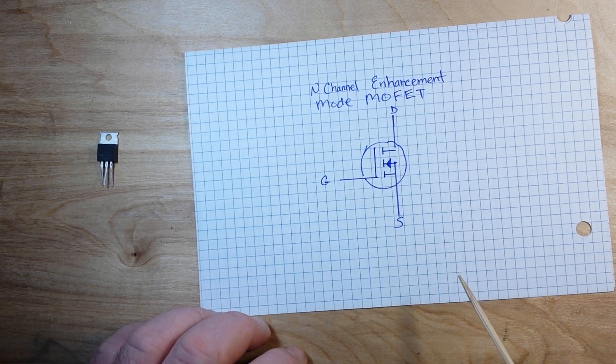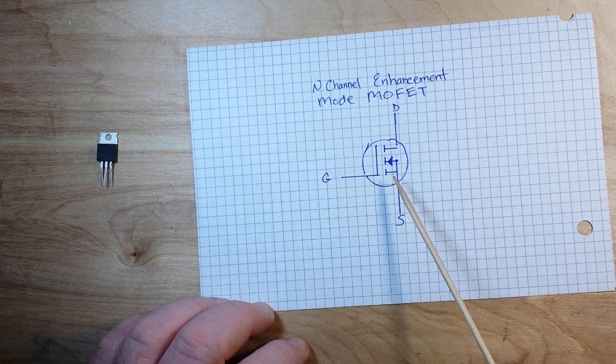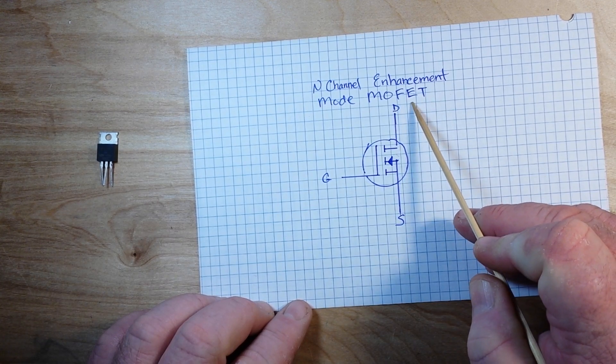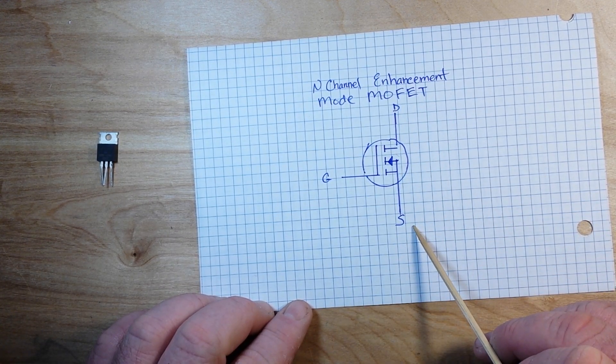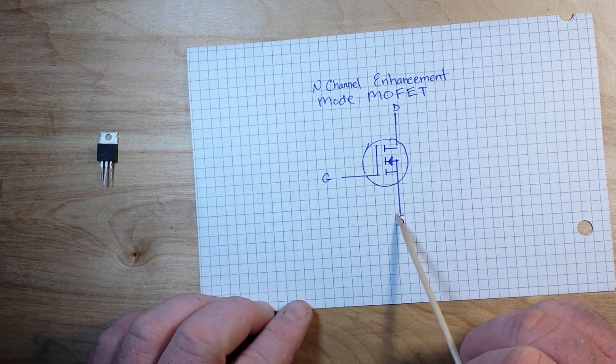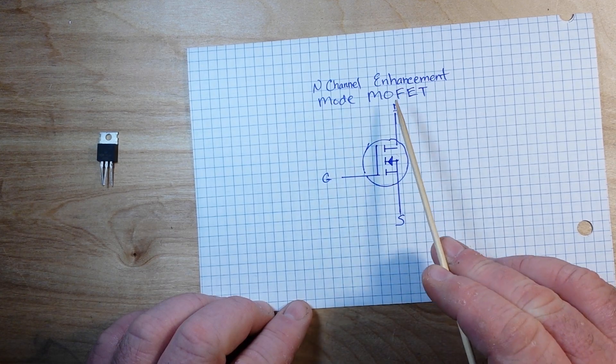So, you know, say you have your VCC up here and you got your ground down here. When you apply a voltage here that is higher than here, it is going to switch on this connection.